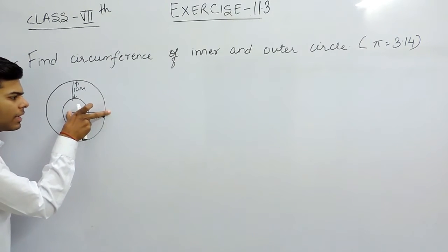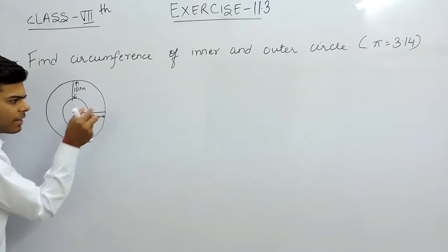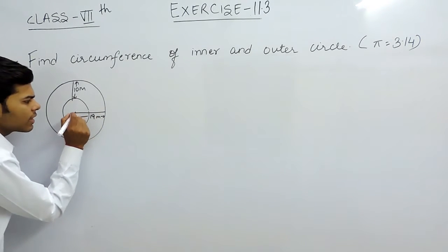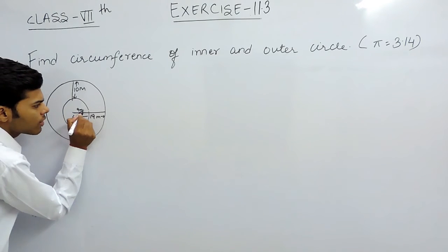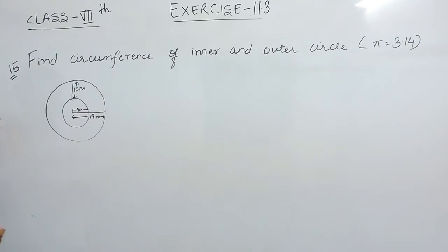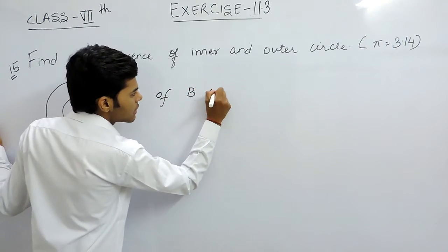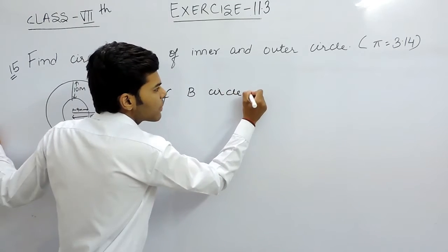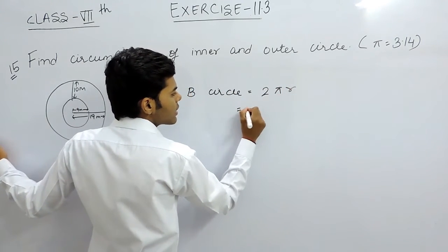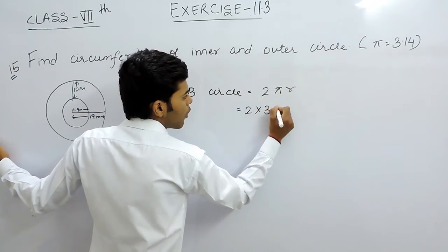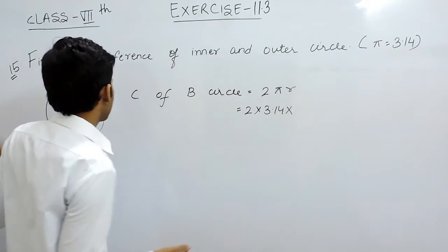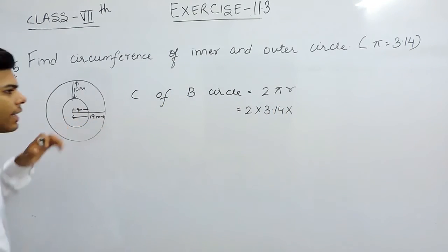So if this complete is of 19 meters, this part is of 10 meters, that means that this part is of 9 meters. And it is simply the radius of this inner circle. So circumference of bigger circle will be equals to 2 pi r, that is 2 multiplied with pi, 3.14 multiplied with r, that will be 19.